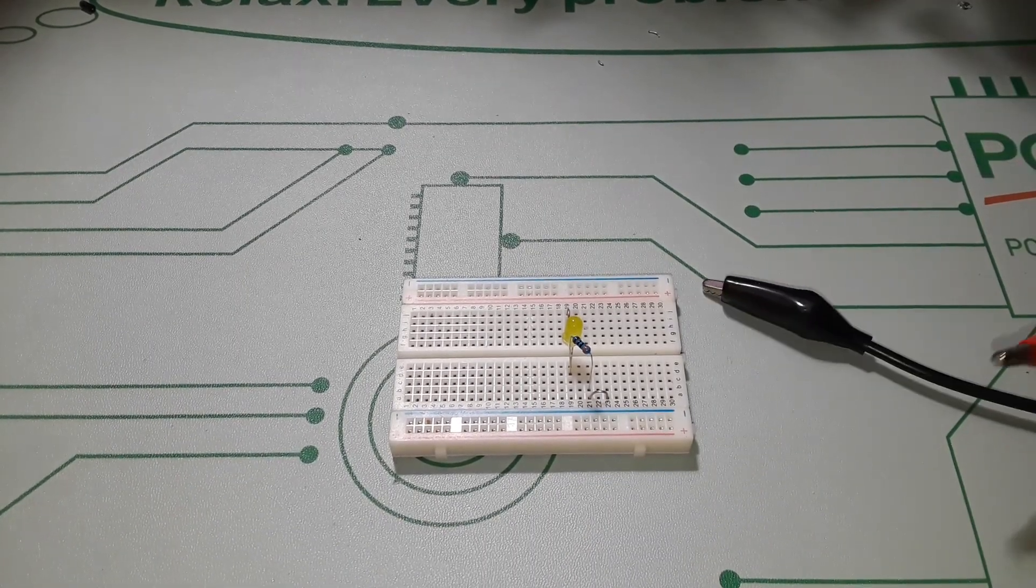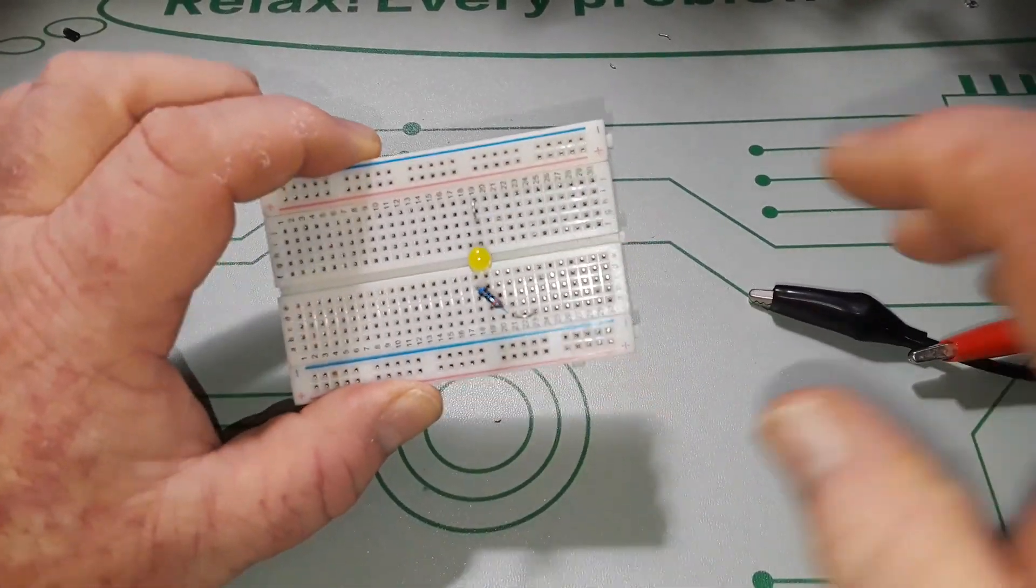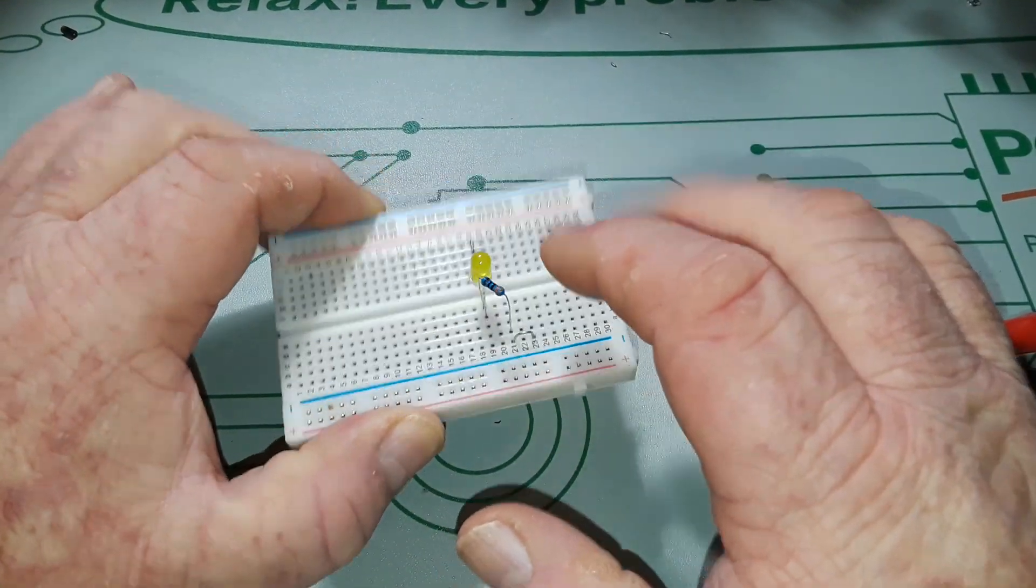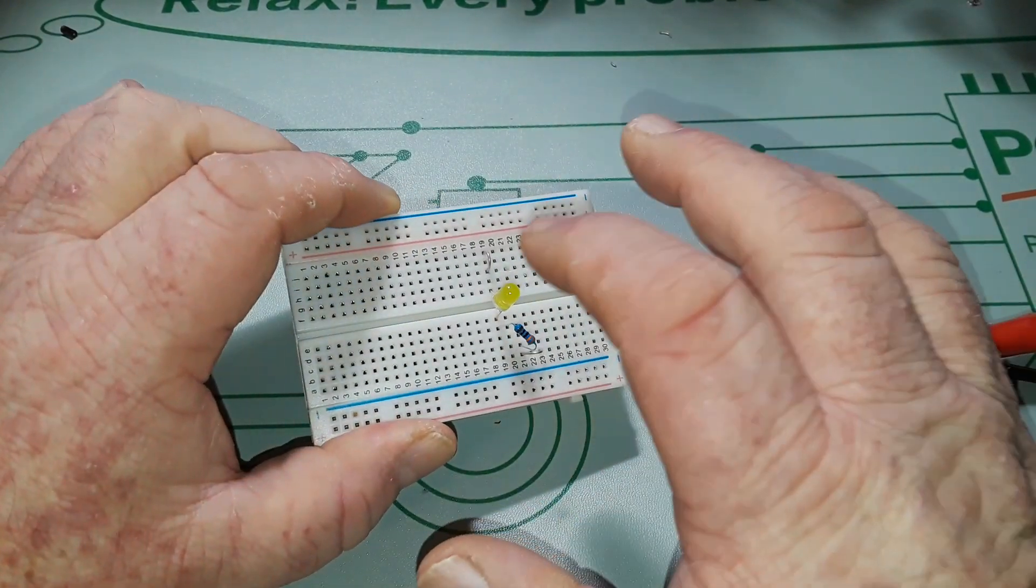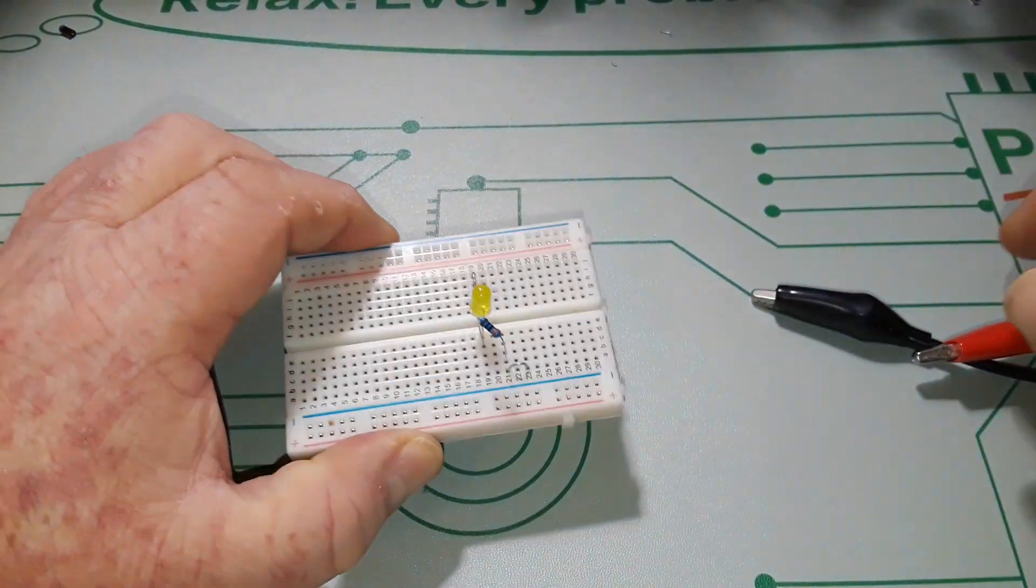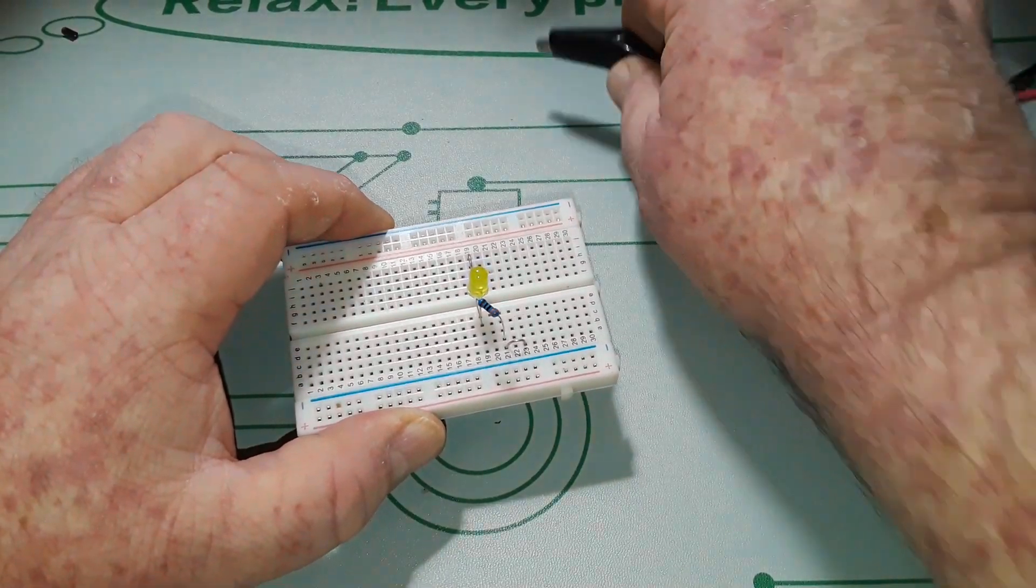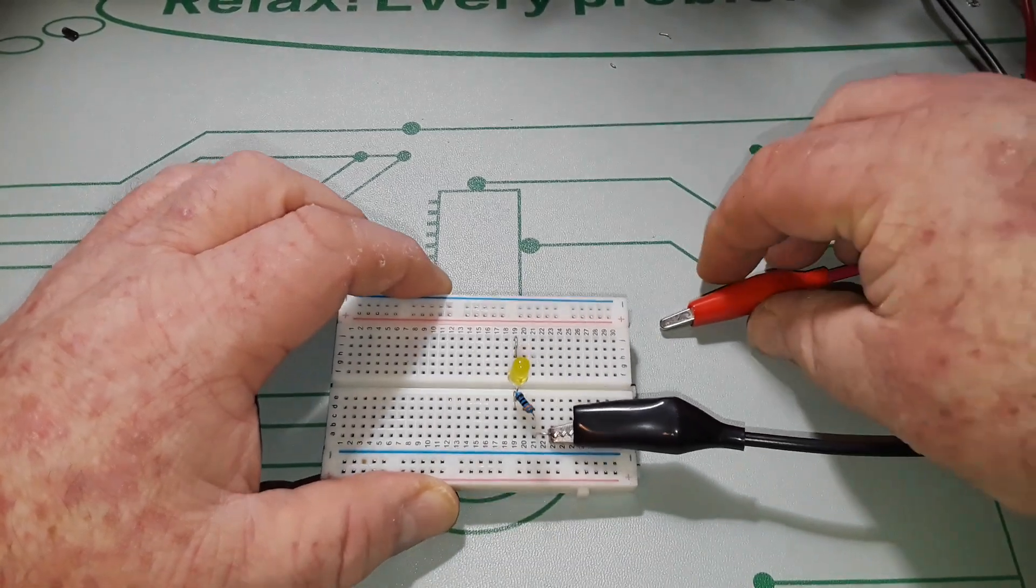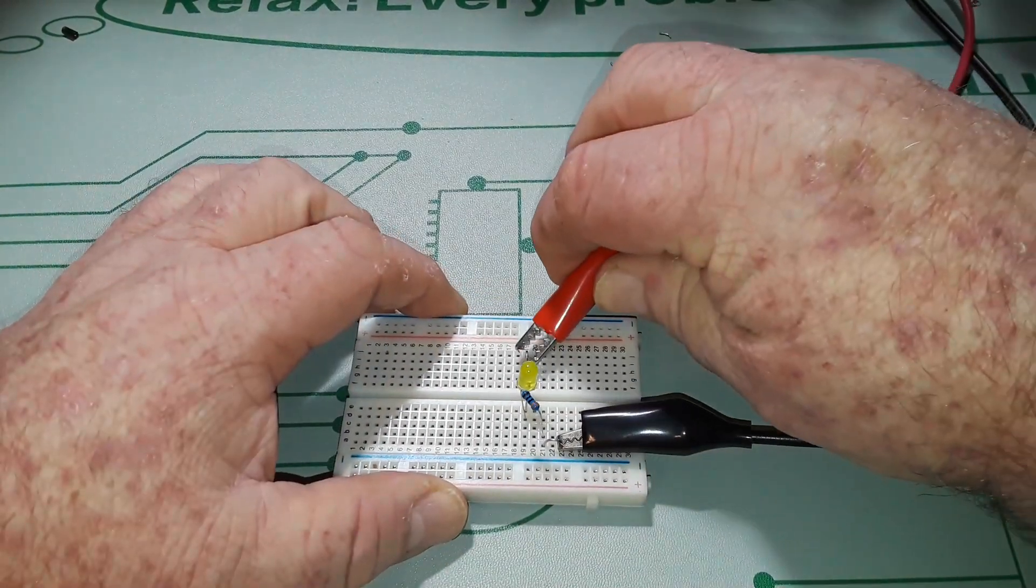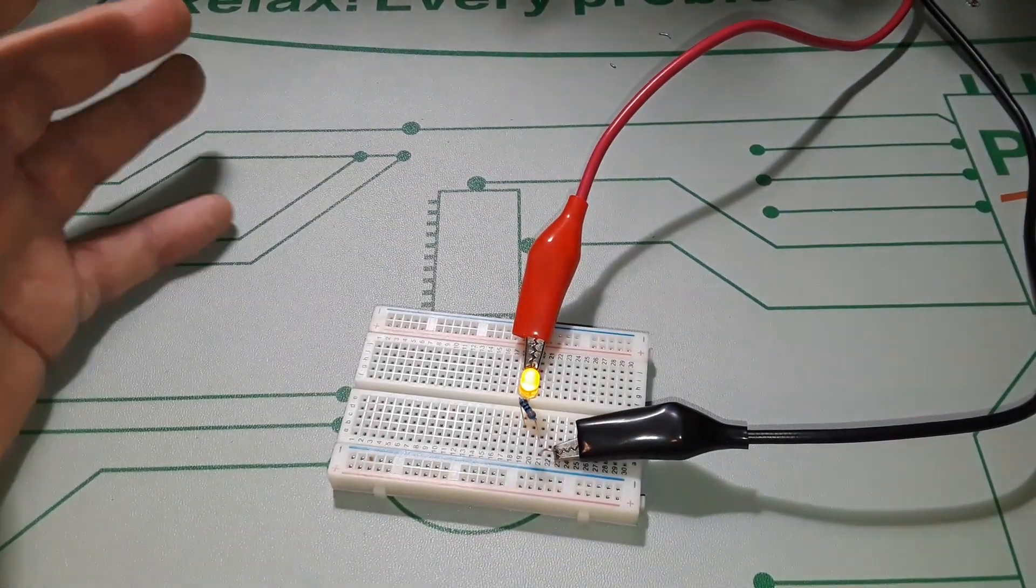All right, let's get started. So if we take the most simple circuit, an LED and a resistor, this is a 330 ohm resistor. This is a 5 millimeter LED. And we hook it up, hooking up the grounds first always.